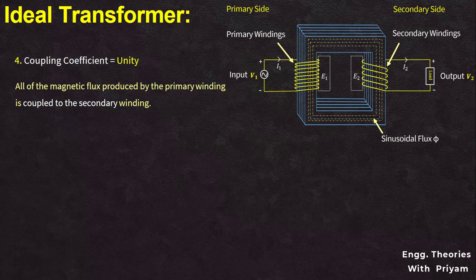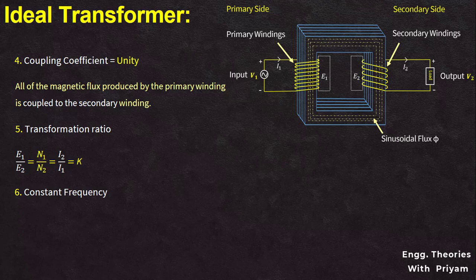Another characteristic is the transformation ratio, or turns ratio, defined as: E1/E2 = N1/N2 = I2/I1 = k. Another characteristic is constant frequency, meaning the frequency of the primary and secondary voltages is the same. Another characteristic is constant phase angle, meaning the phase angle between output voltage and current is the same as the phase angle between input voltage and current.